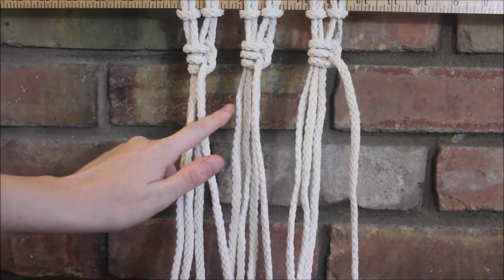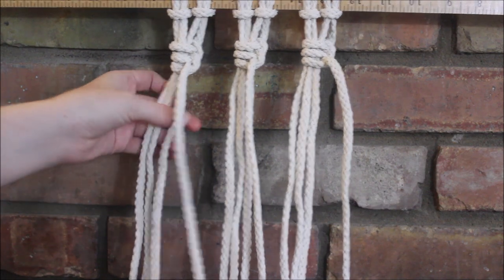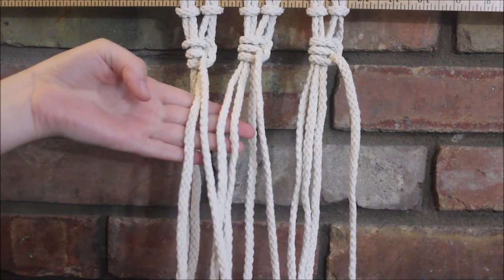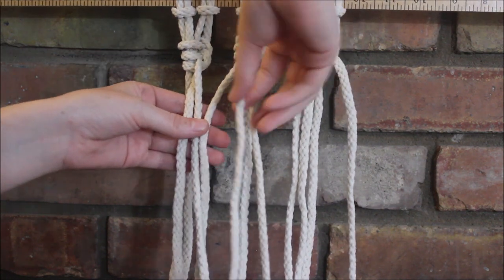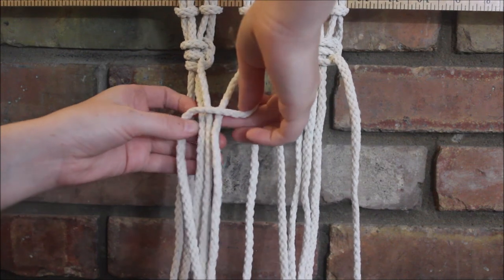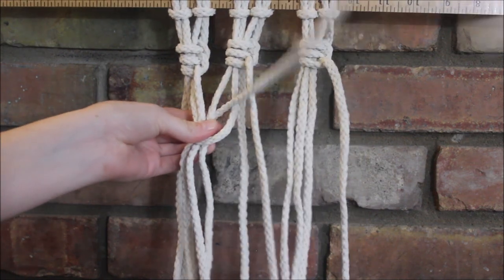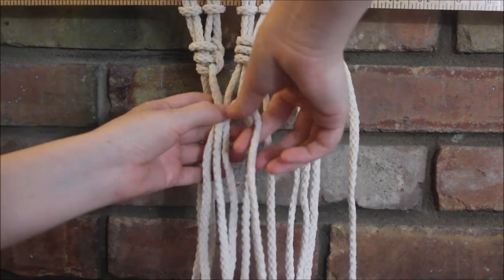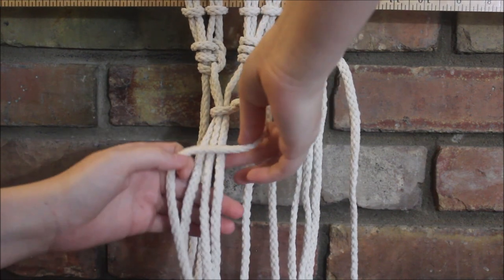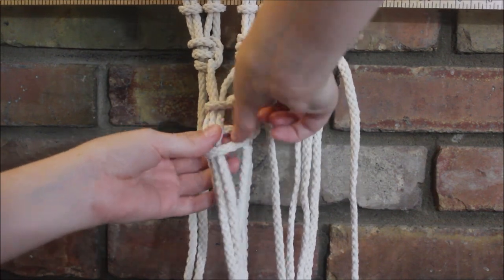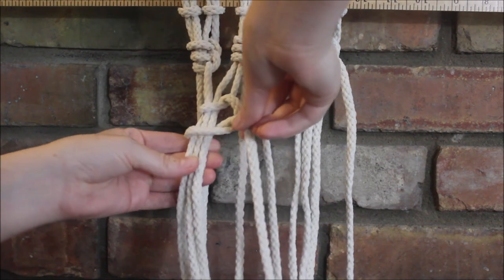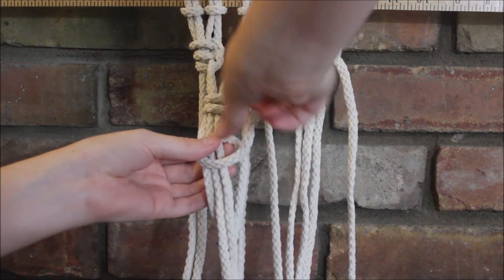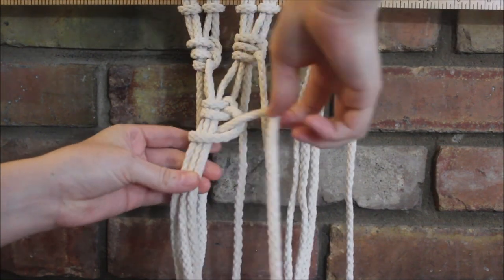Now we are going to make a row right below it, this time using two strings from each previous section. And again, we'll take the one on the far right, wrap it around the other three ropes through the loop. And then you pull on that gently to tighten it up. And you repeat. And then you do it one more time. So it wraps around the three, through the loop, and you pull that gently.